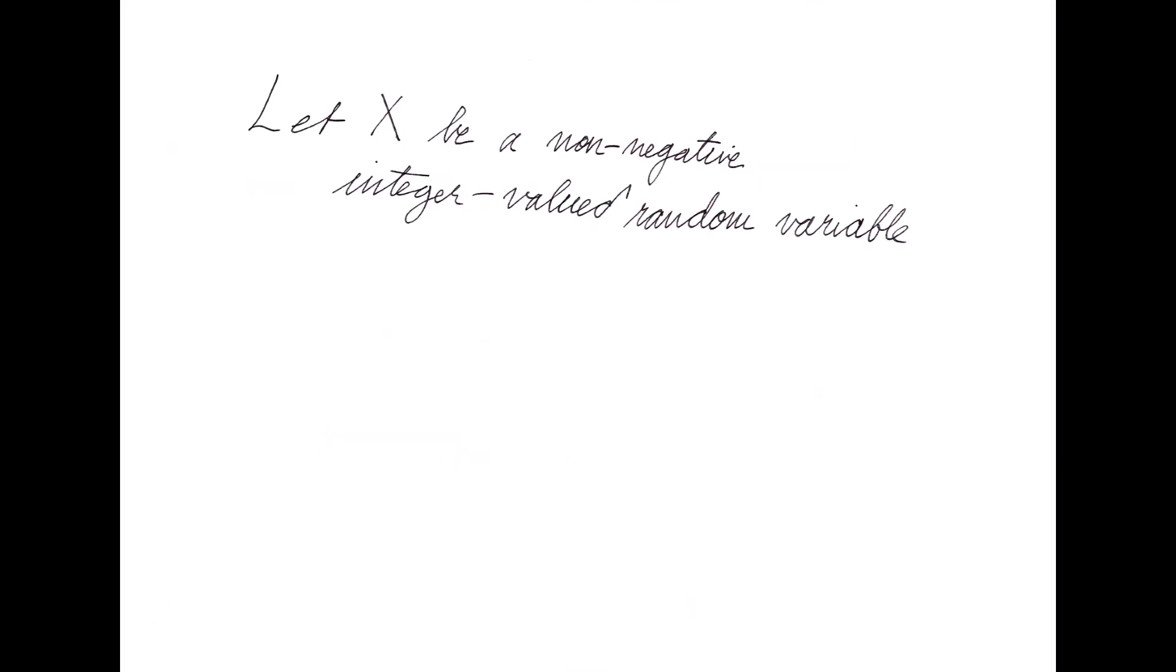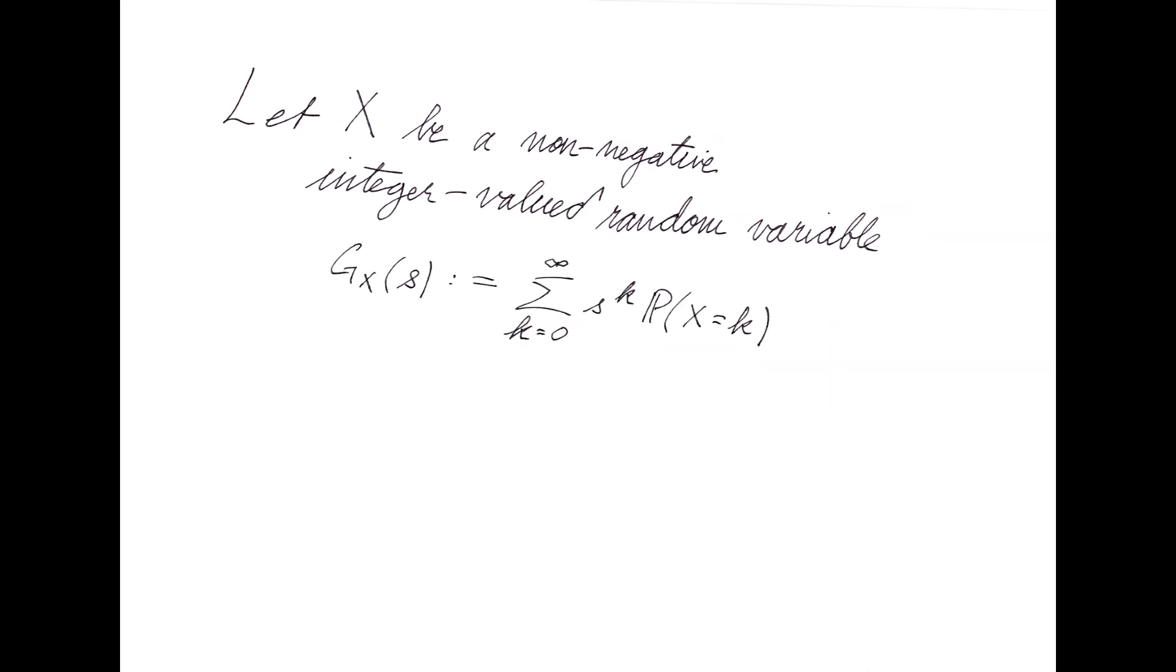Take any random variable X which takes non-negative integer values. For the purposes of this video, all random variables will take on exclusively non-negative values. Its probability generating function is the power series formed by taking the kth coefficient to be the probability that X equals k.